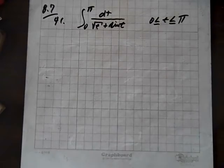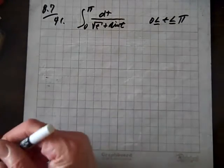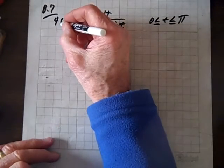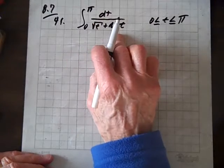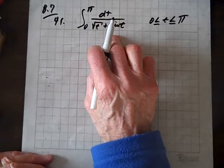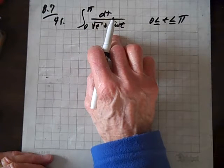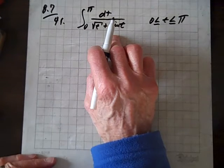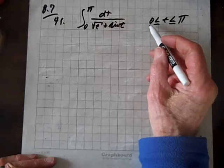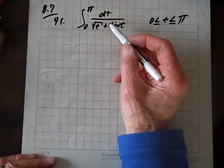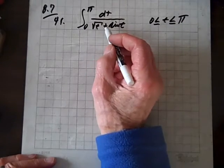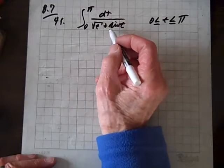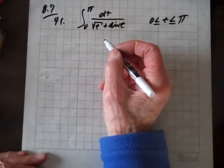Well, now we're on section 8.7, we're doing question 41, and we want to know if this integral here diverges or converges. Our limits are from 0 to pi. The problem is it's 0. If we let t be 0, then we have division by 0 and we have an issue with that.